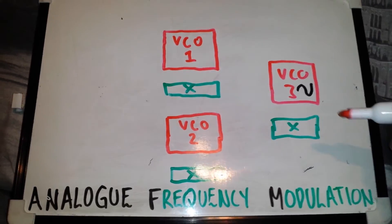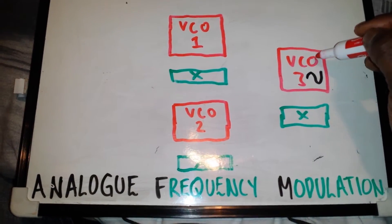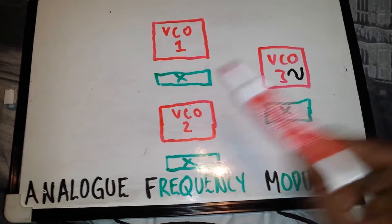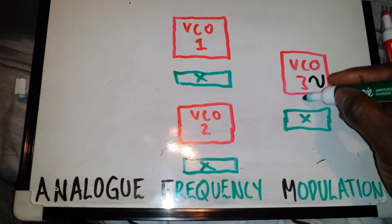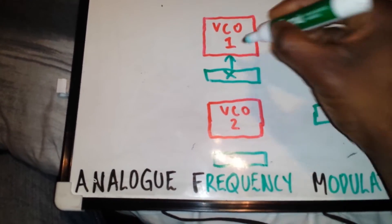So what we have here is if we think of these VCOs as in FM synthesis they are called operators. And again just to recap, these X blocks are the exponential converters which feed each VCO.